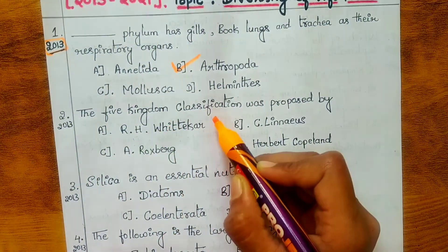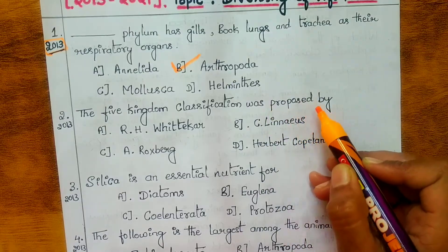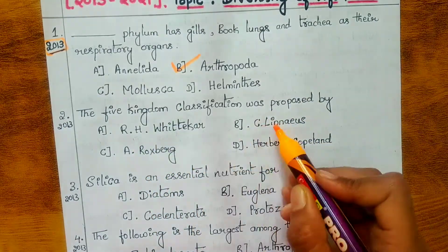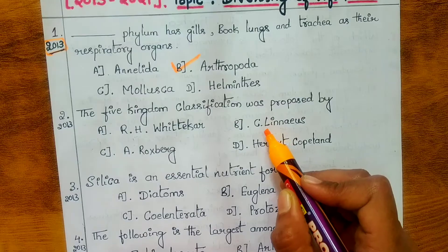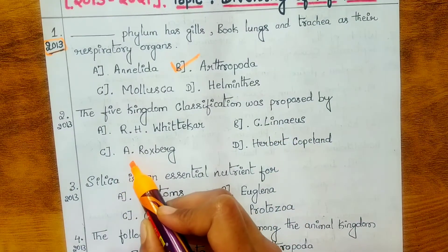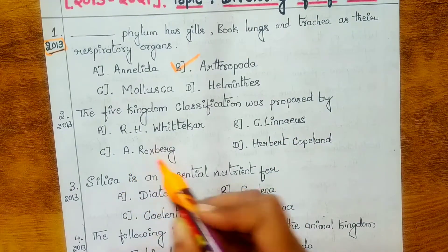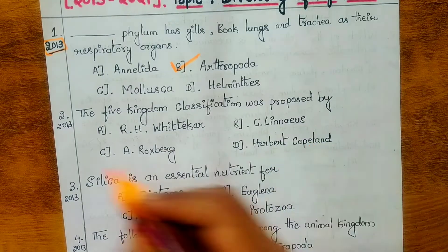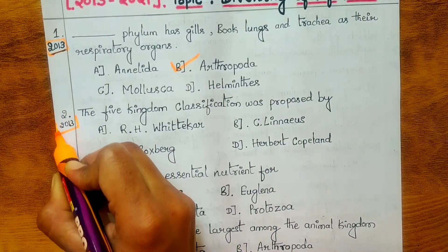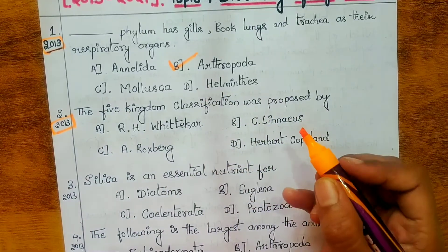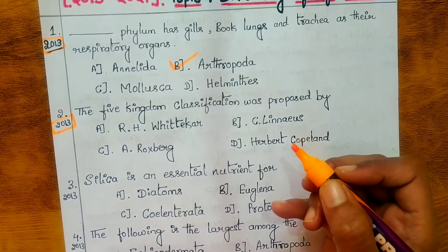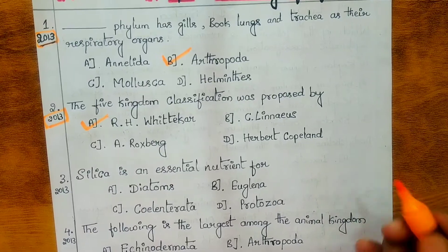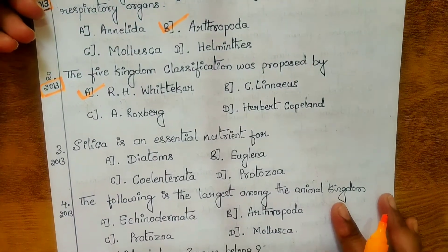The second question, also from 2013: the five kingdom classification was proposed by whom? Options are: R.H. Whittaker, C. Linnaeus, A. Roxburgh, and Herbert Copeland. The answer is R.H. Whittaker — the five kingdom classification was proposed by R.H. Whittaker.